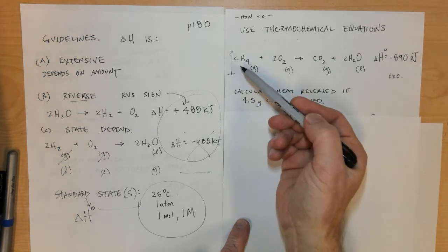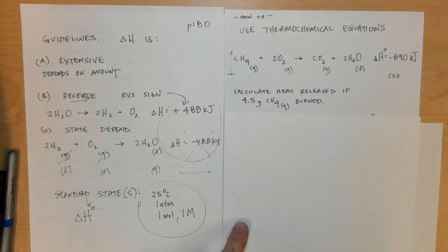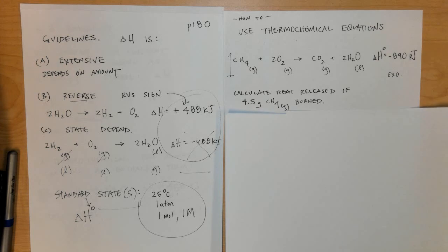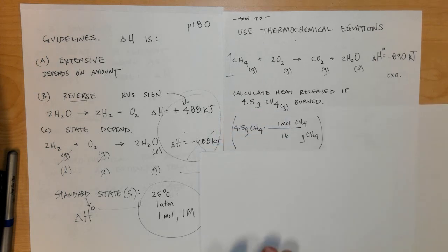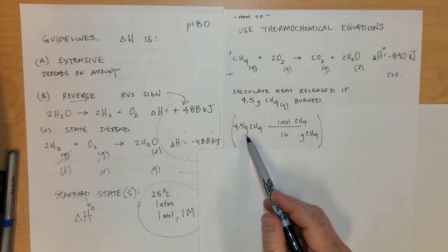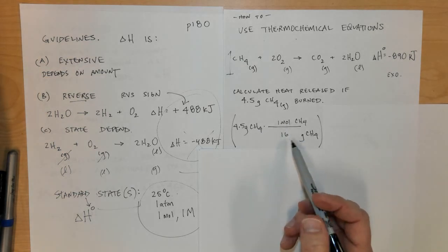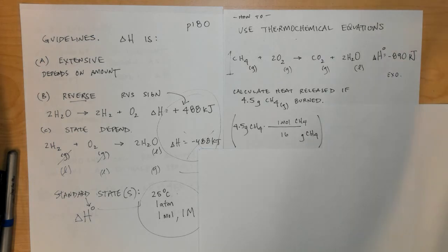The first thing we need to do is when in doubt, convert to moles. Take our 4.5 grams, put one mole on the top, 16 grams on the bottom, which I get by adding up one carbon and four hydrogens on the periodic table.